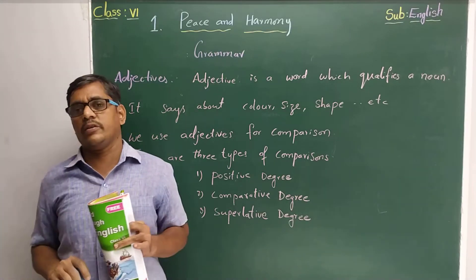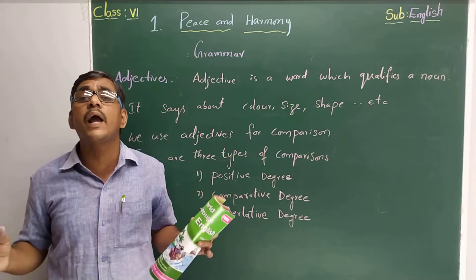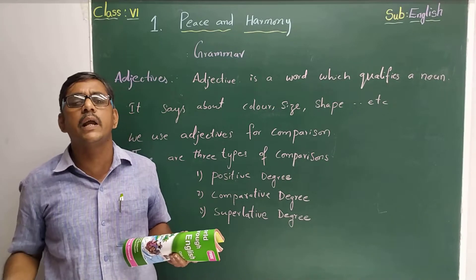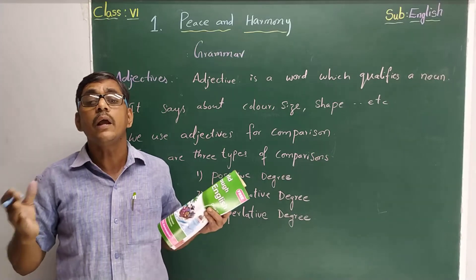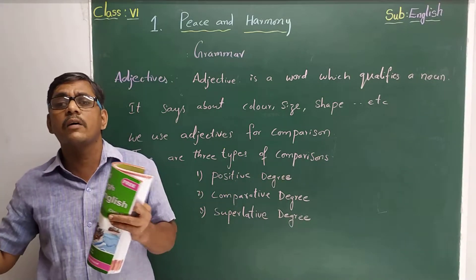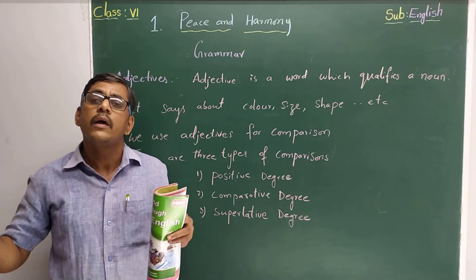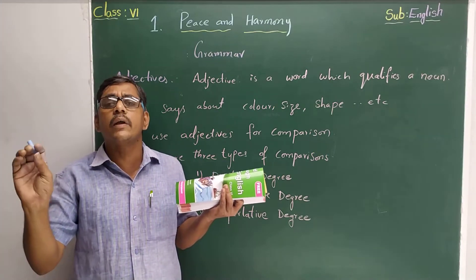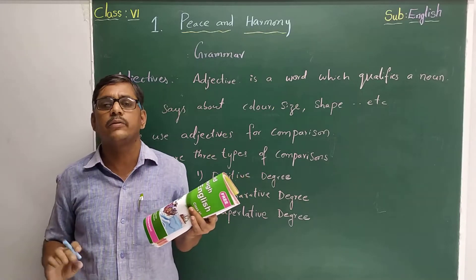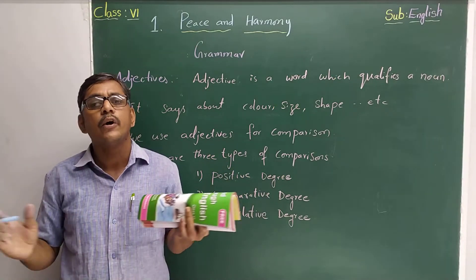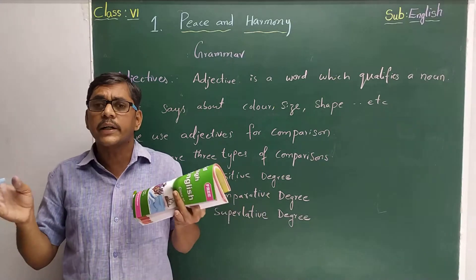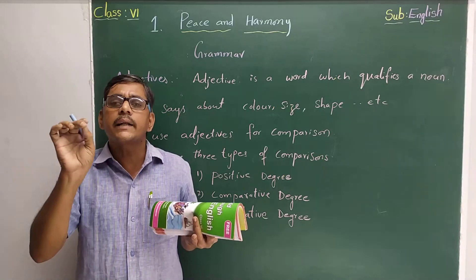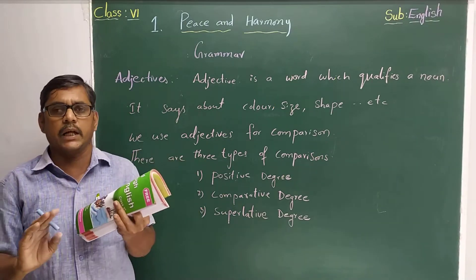After preposition comes conjunction. Conjunction means when we want to write more words together — for example, in the peace and harmony lesson, we wrote: elephants, bears, tigers, and peacocks. Lots of words are there, separated by commas. And when we want to add words together, we use a connector. That connector is 'and,' and that is called a conjunction. To add two words, two sentences, two phrases, or two clauses, we need one connection — that connection is called a conjunction.